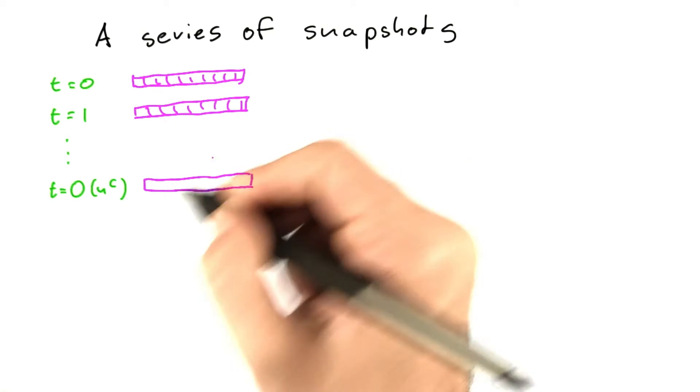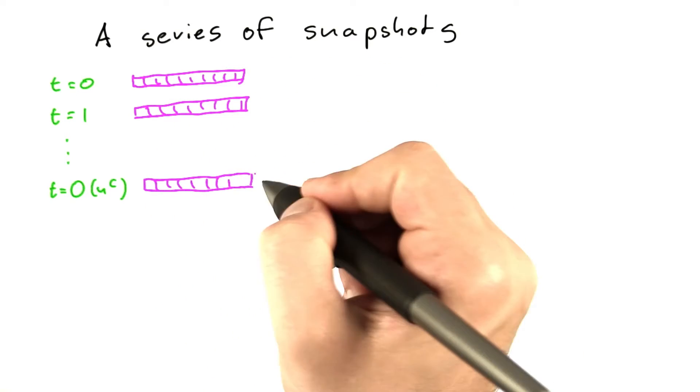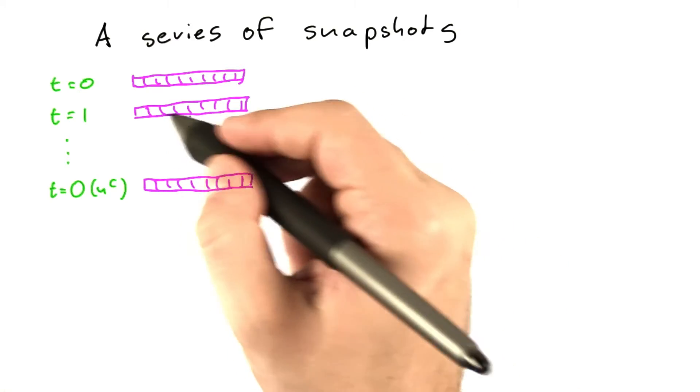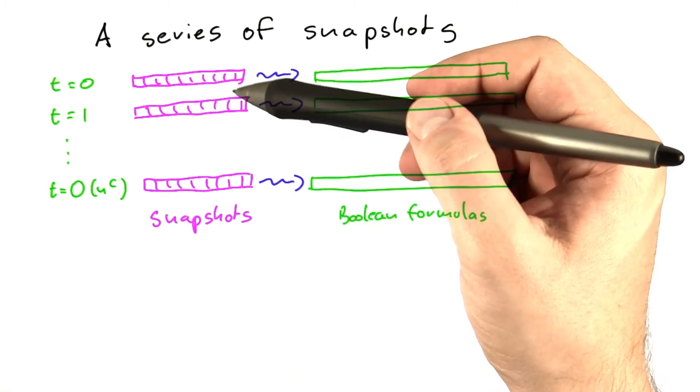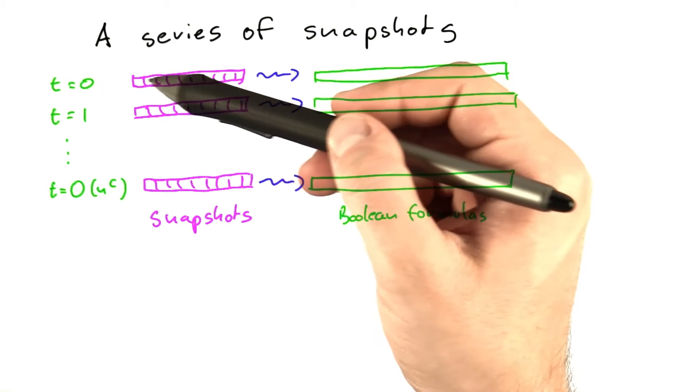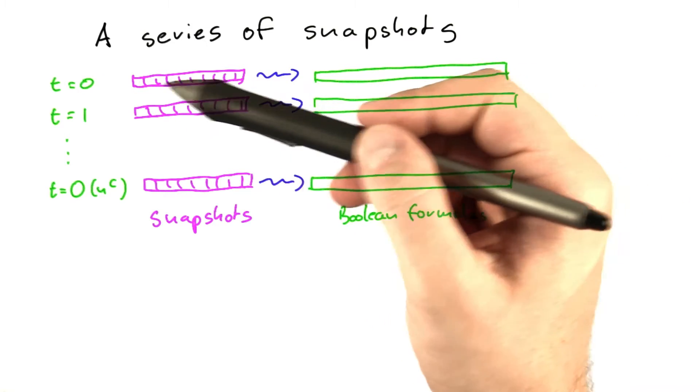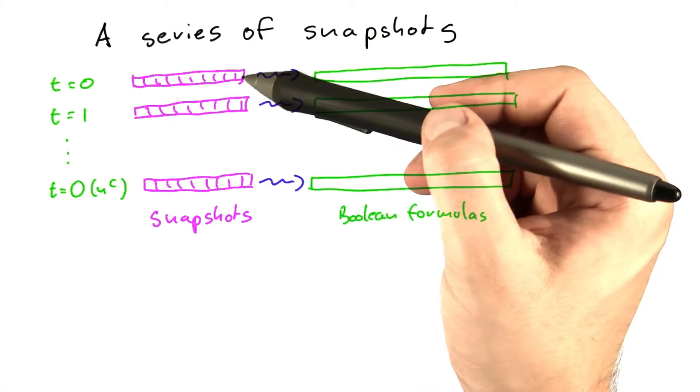I'm now going to draw the snapshots only like this. You know that it represents the input, the program, and the read-write memory as well. The state of the non-deterministic RAM at each point in time can be represented as a snapshot.